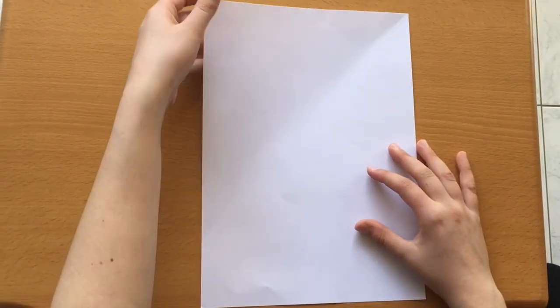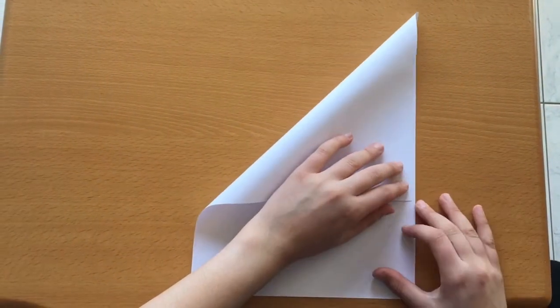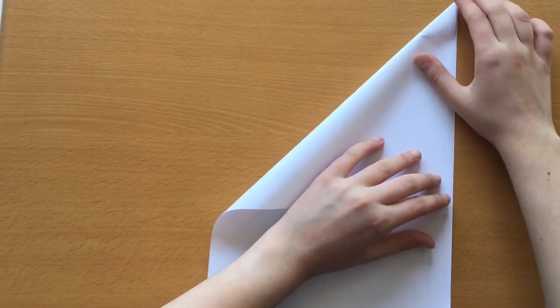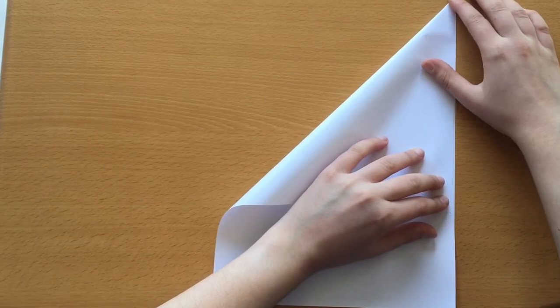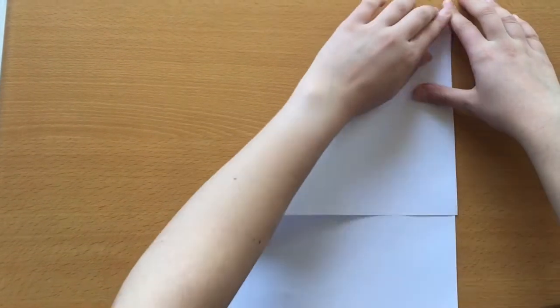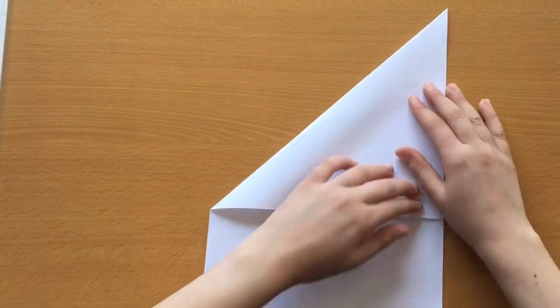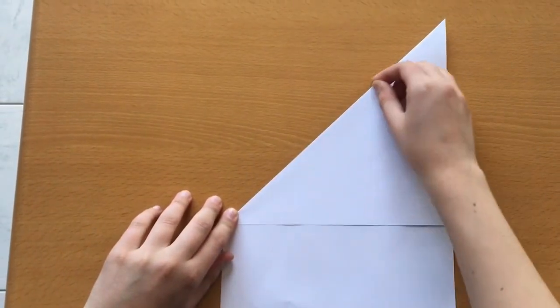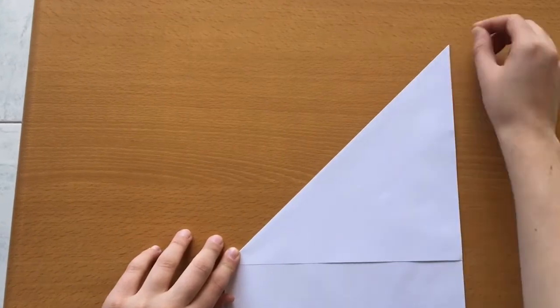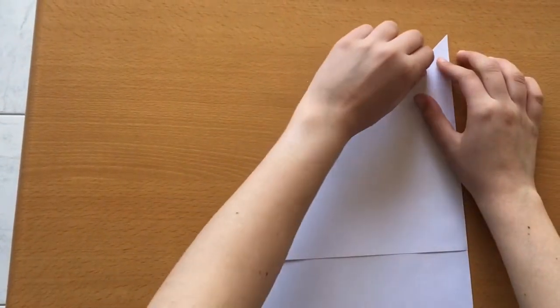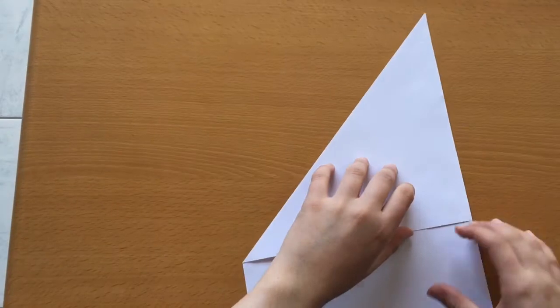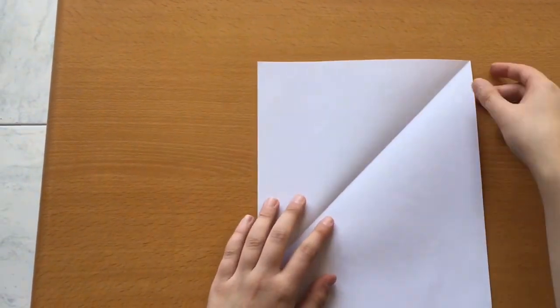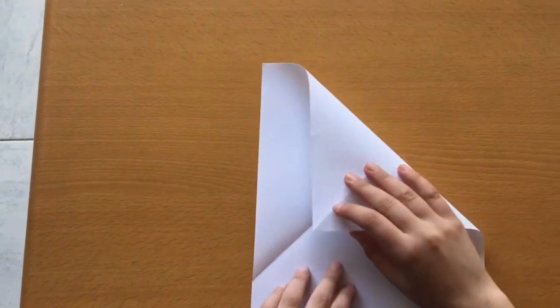The first step is to make a diagonal fold from the top left corner of the page. Open the fold up and make another diagonal fold on the other side.